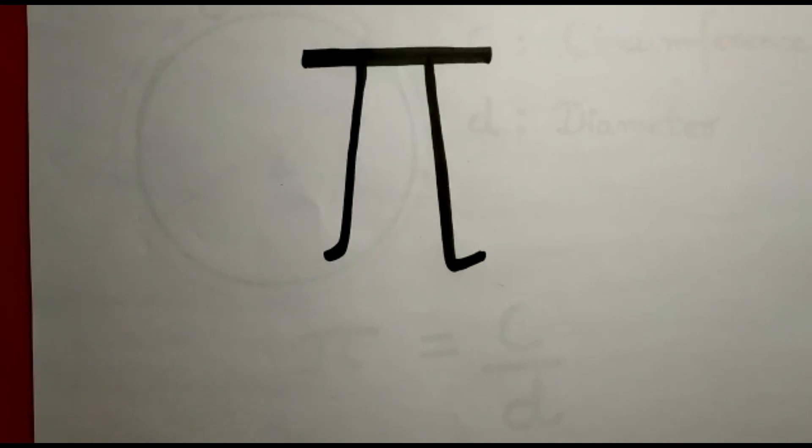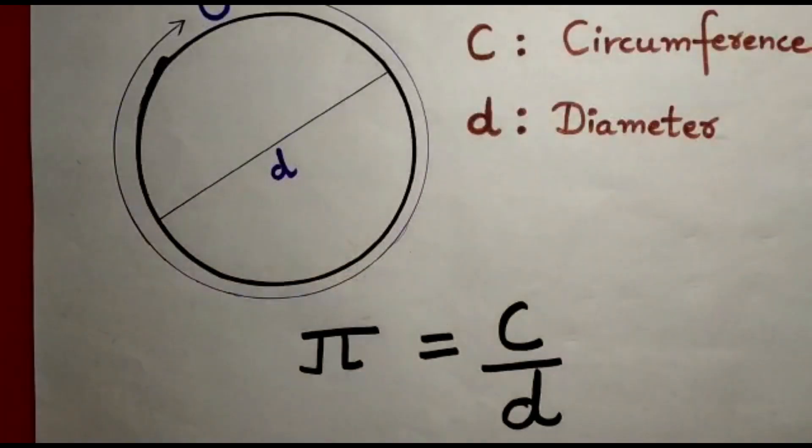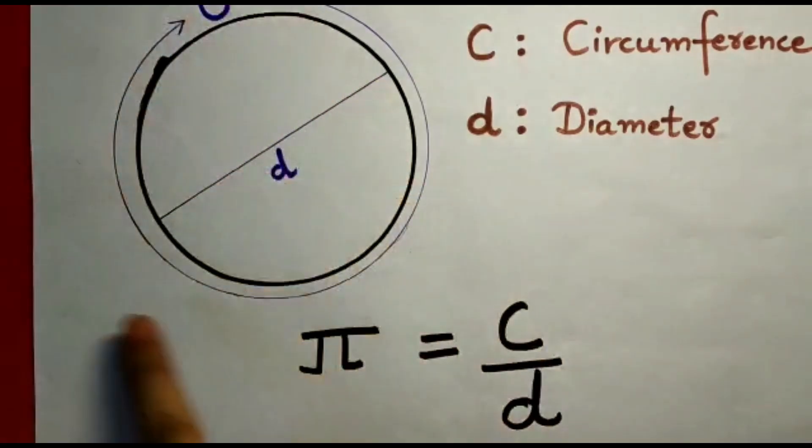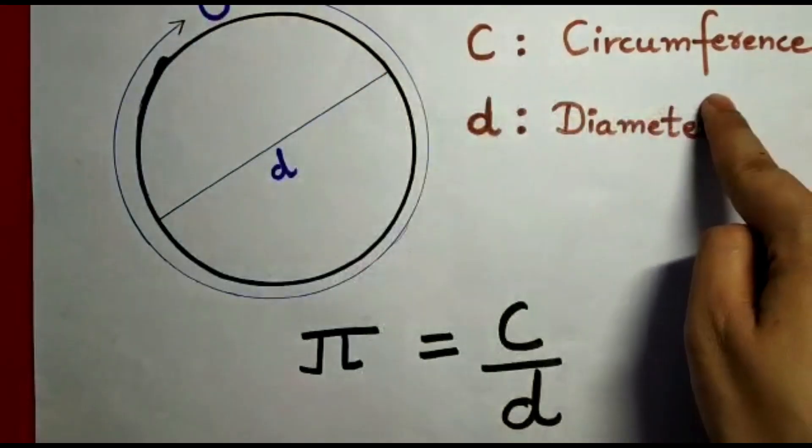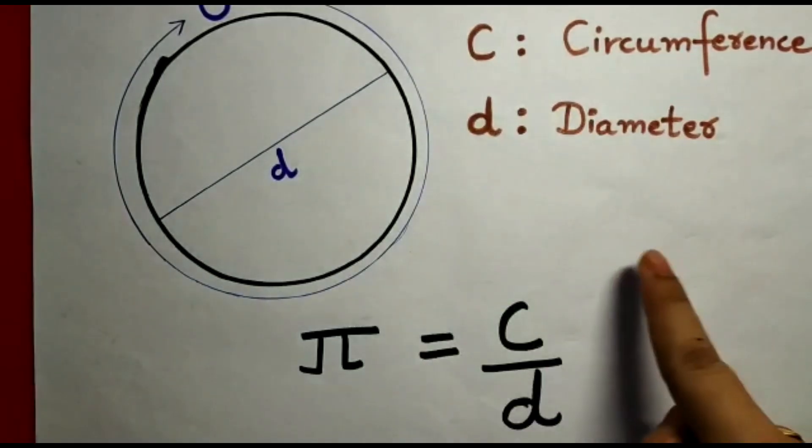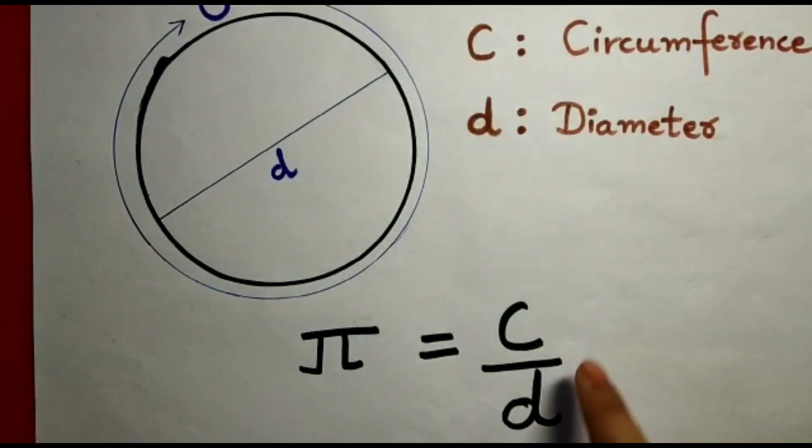Now I'm talking about the definition of Pi. If someone asks you what is Pi, explain like this: you have a circle with circumference C and diameter d. When you divide the circumference by the diameter, you will get the value of Pi. So this is the definition of Pi.